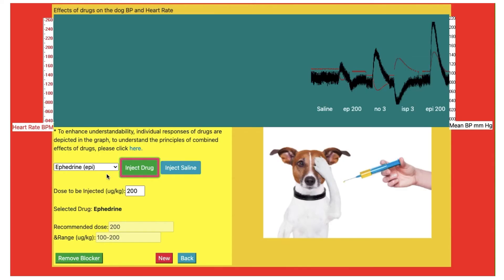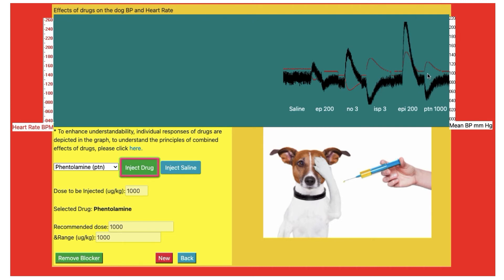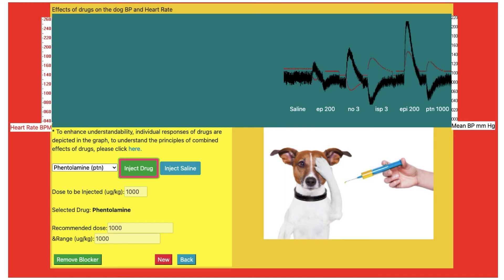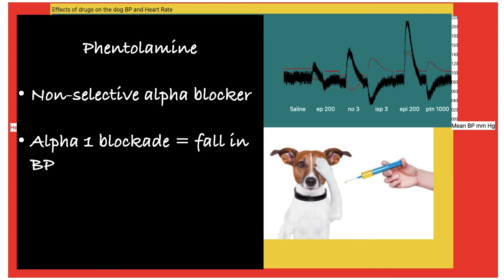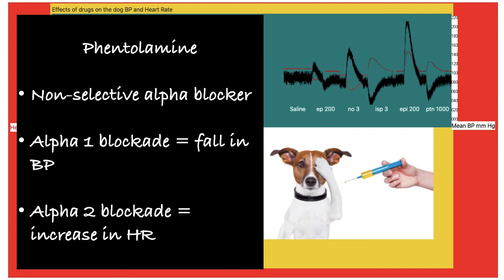Now we will see sympatholytic agents. First is phentolamine, which is a non-selective alpha receptor blocking agent. Select and inject the drug. Phentolamine decreases blood pressure and increases heart rate. By blocking the alpha-1 receptor, there will be a fall in blood pressure. Due to blockade of alpha-2 receptors, there will be an increase in heart rate. Alpha-2 receptors are located presynaptically and act as a brake, inhibiting the release of norepinephrine from nerve endings. Blocking alpha-2 receptors results in release of norepinephrine into the synaptic cleft and increased heart rate in response to norepinephrine release.